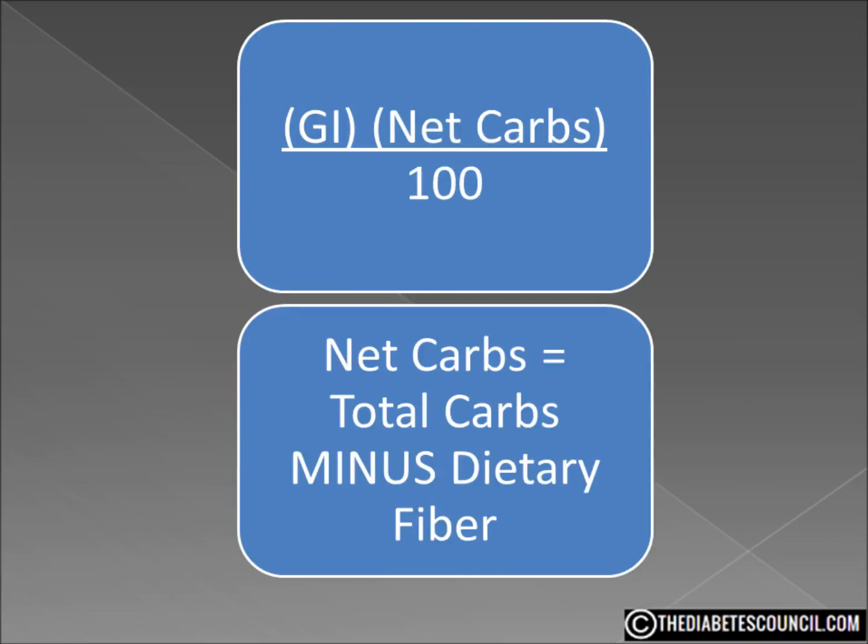Determining the glycemic load of a food is really simple. You take the GI, multiply it by the net carbs, and divide it by 100. That formula is on your screen. Note that the net carbs are the total carbs minus dietary fiber. You may have to do a little math, but in the end it's all worth it.